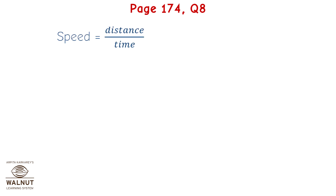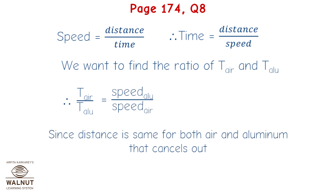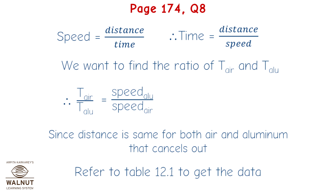Speed equals distance upon time, therefore time equals distance upon speed. We want to find the ratio of time in air to time in aluminium. Therefore, t_air upon t_aluminium equals speed of aluminium upon speed of air, which equals 6420 upon 346, which equals 18.55.